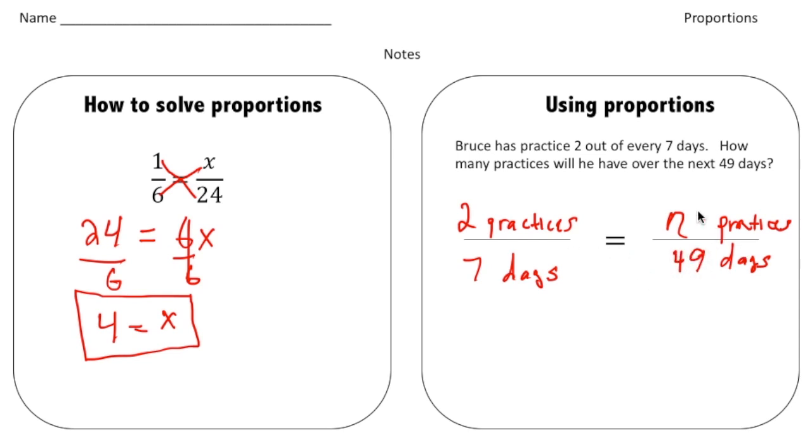Now that we have our two ratios, we can use the method over here to solve for it. So I know that 2 times 49 is going to equal 7 times n. And then 2 times 49 is 98. That should be an n, excuse me. So 98 equals 7n.